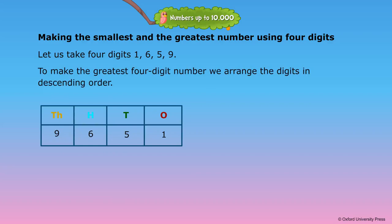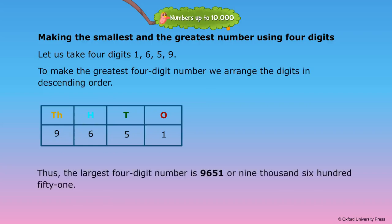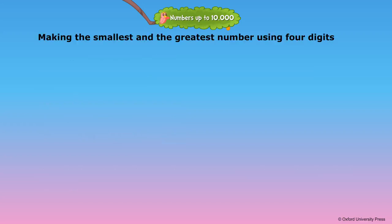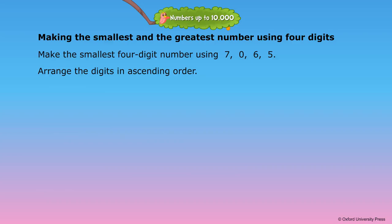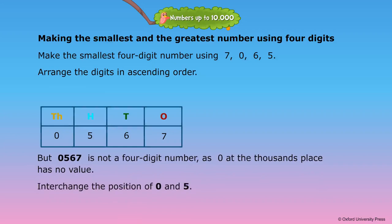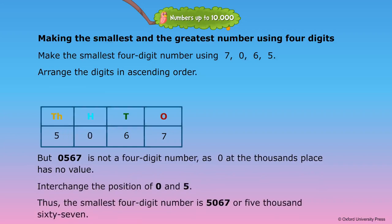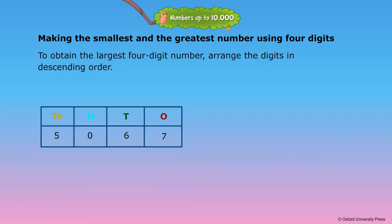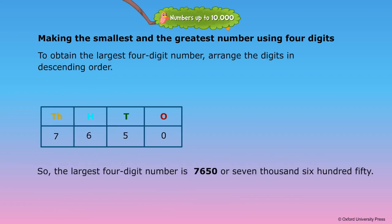9, 6, 5, 1. The largest 4-digit number is 9,651. Make the smallest 4-digit number using 7, 0, 6, and 5. Arrange the digits in ascending order: 0, 5, 6, 7. Interchange the position of 0 and 5. The smallest 4-digit number is 5,067. To obtain the largest 4-digit number, arrange the digits in descending order. So the largest 4-digit number is 7,650.